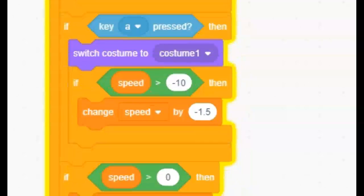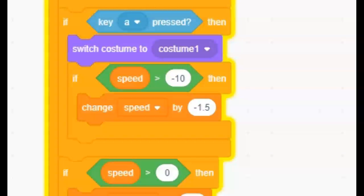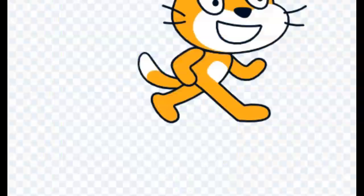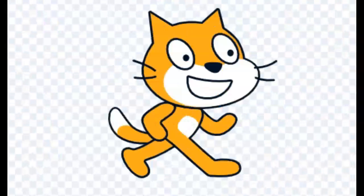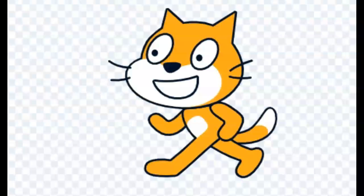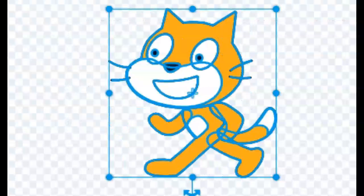If the A key gets pressed, then I switch to costume 1, which is the costume I made. I flip it by copying this costume and then pasting it, and then flipping it around with flip horizontal.